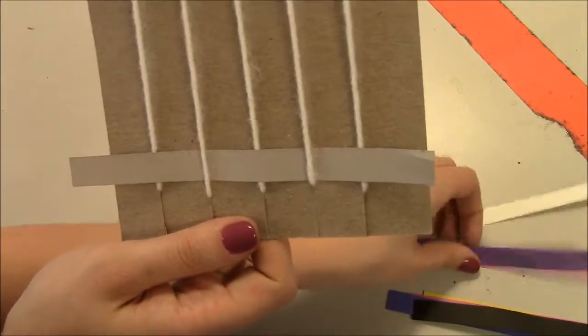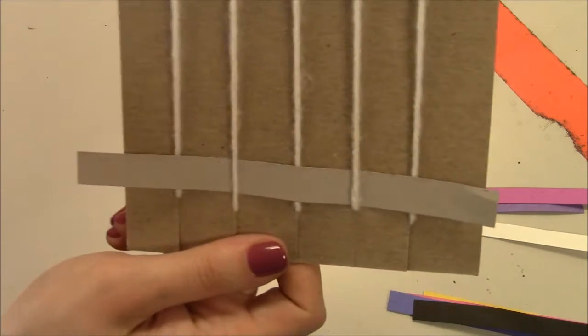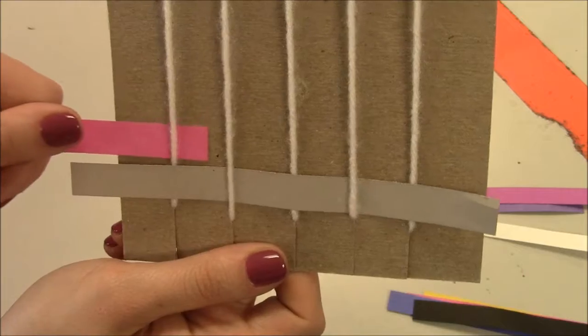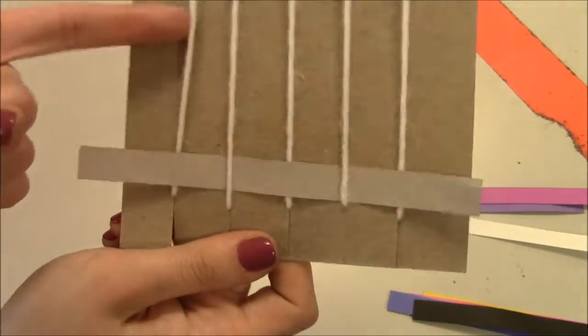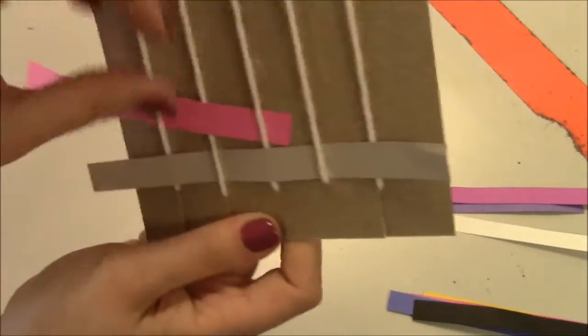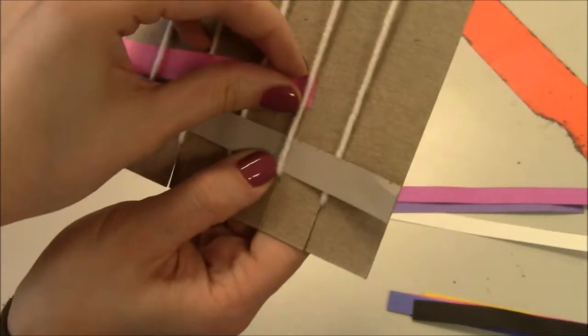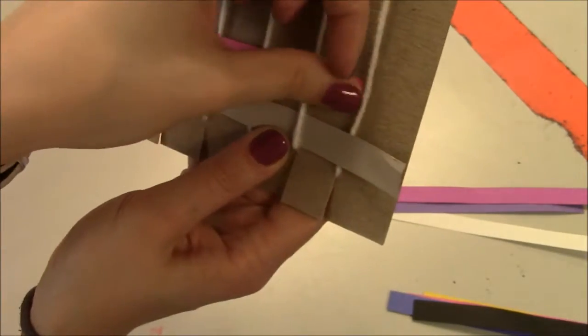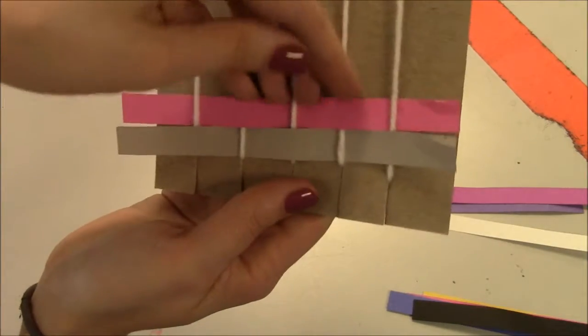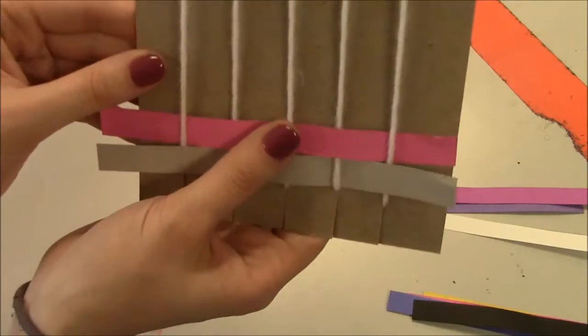My next weft needs to be the opposite. So instead of going in front, I'm going to go behind. So I should see my string now, behind, in front, behind, in front, behind. And when I wiggle it down, it shouldn't go behind the gray or in front of the gray. It should just stay on top.